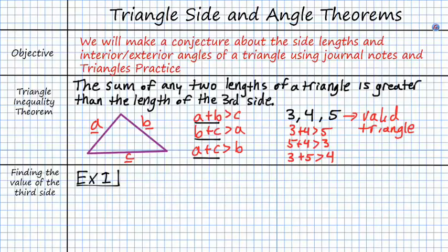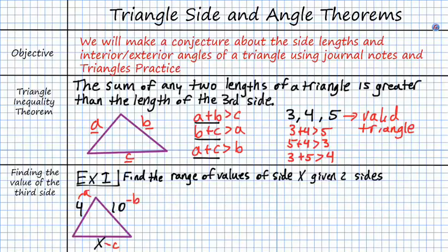So let's look at example 1. In example 1, we are looking to find the range of values of side x given the other two sides. So we want to kind of develop the idea of what x could be to make this a valid triangle, right? Because we know that triangles meet certain requirements. One of those requirements is our triangle inequality theorem, which says that the sum of any two sides of the triangle is greater than the length of the third side. So we're looking for x, and we have some constraints on the system.